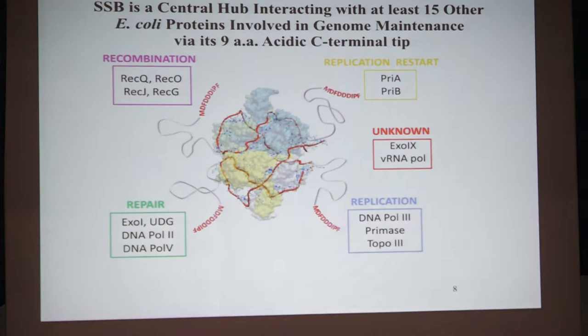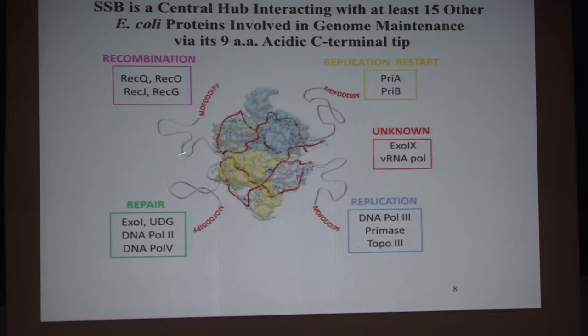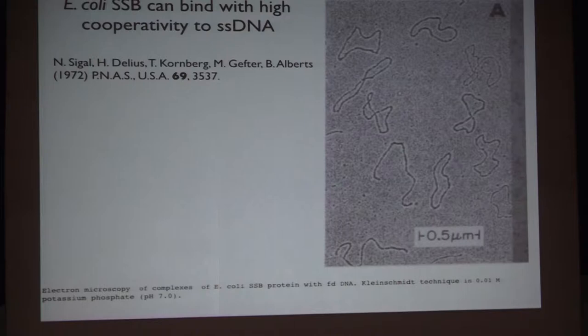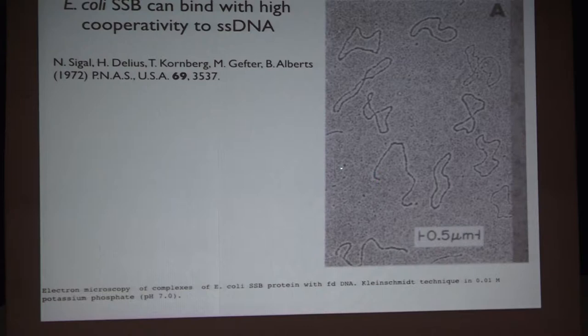What we'll be focusing on are the regions not observed in the crystal structure — the C-terminal regions — and the 15 other proteins interact primarily with this acidic region of the tetramer. Early on, this is a study from Bruce Alberts, Tom Kornberg's, and Malcolm Gefter's lab: an electron micrograph of single-stranded DNA under conditions where there's less than a saturating amount of protein. In the same field, you see DNA with essentially no protein on it, but also DNA that is essentially fully saturated with protein.